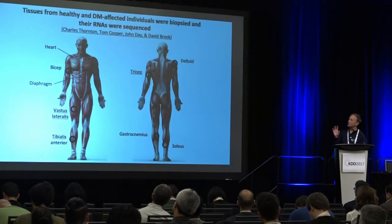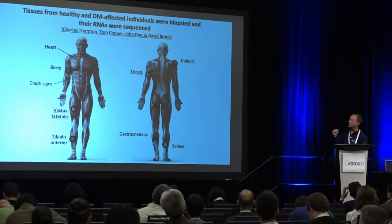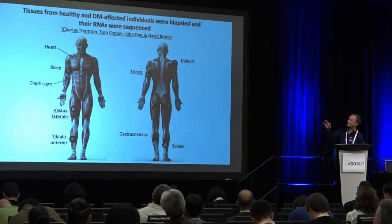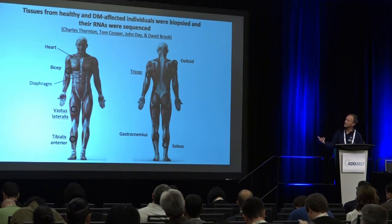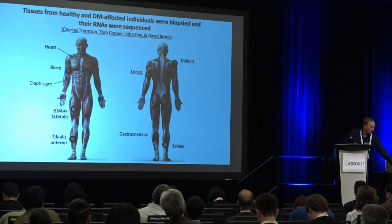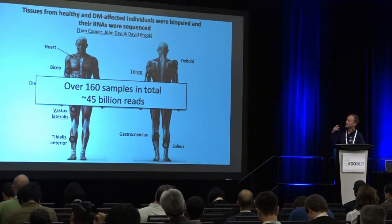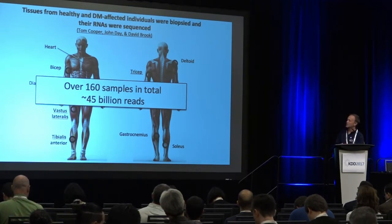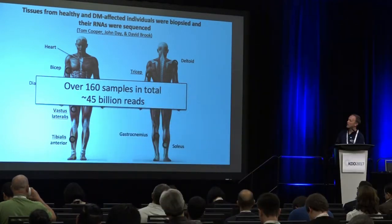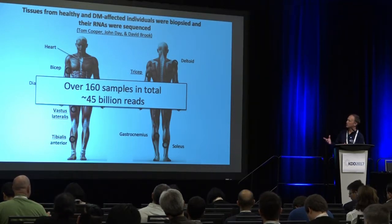We now have data from many collaborators including Charles Thornton, John Day at Stanford, and David Brook in the UK. We have over 160 — now closer to 180 — samples total, including brain samples from autopsy, heart samples, and multiple different muscles. Different muscles are affected differently depending on repeat load, so we want to understand that by studying each one. We now have around 55 billion reads and rely on the HiperGator supercomputer system at UF, supported by a strong computer science group, to manage and analyze all this data.